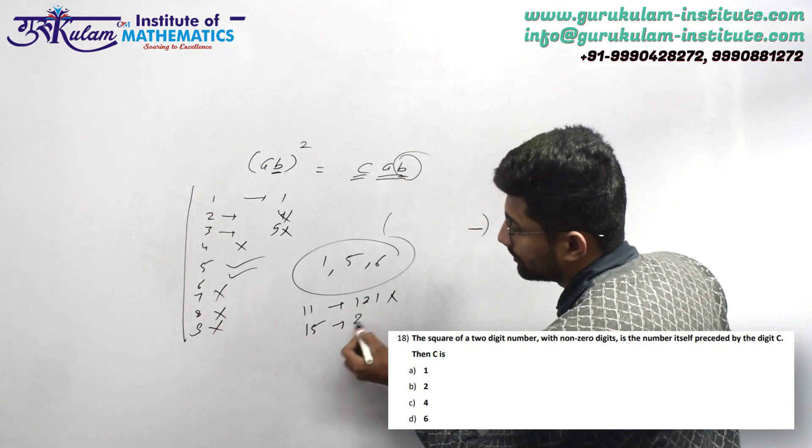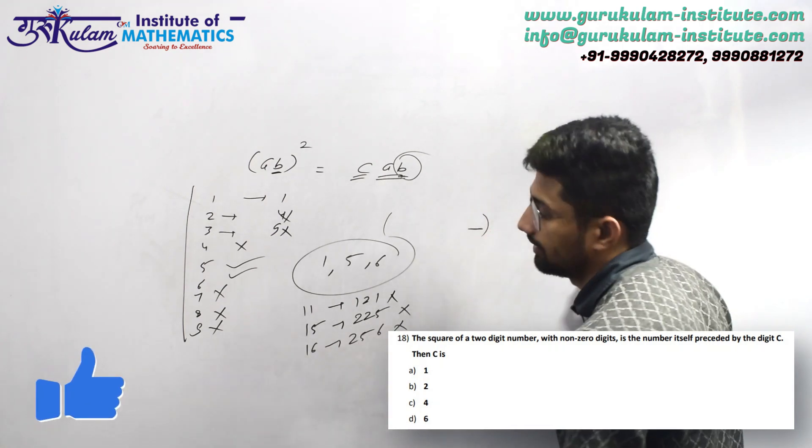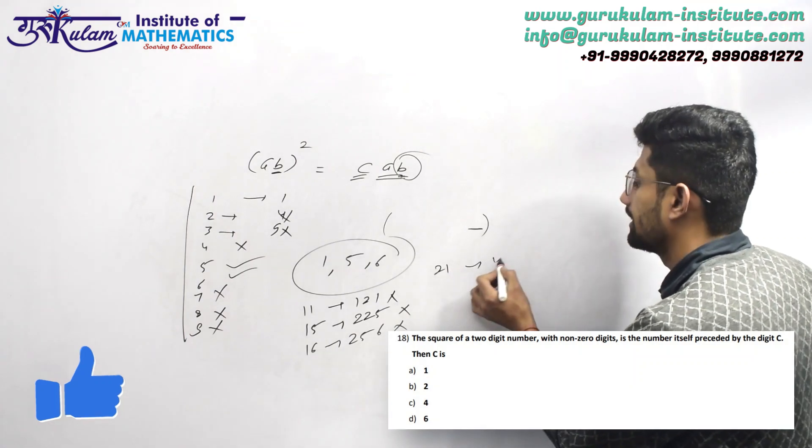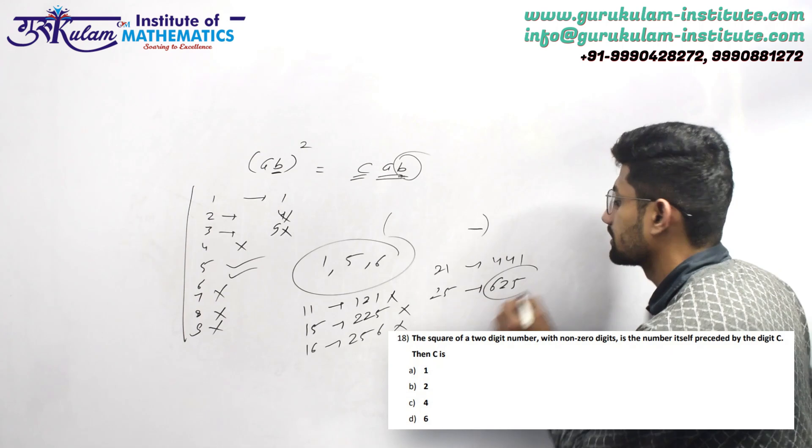15 के लिए, 225 नहीं बन रहा, 16 के लिए, 256 नहीं बन रहा, उसके बाद 21 के लिए, 441 नहीं बन रहा, 25 के लिए, 625 बन गया। (For 15, 225 doesn't work; for 16, 256 doesn't work; then for 21, 441 doesn't work; for 25, 625 works.)